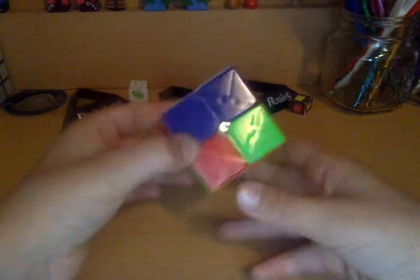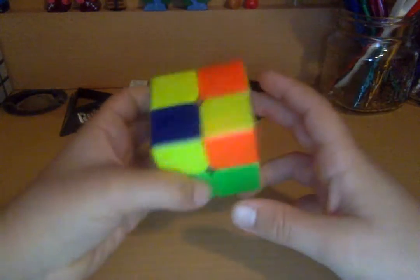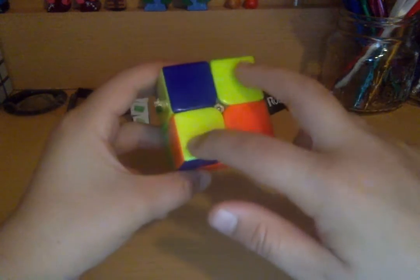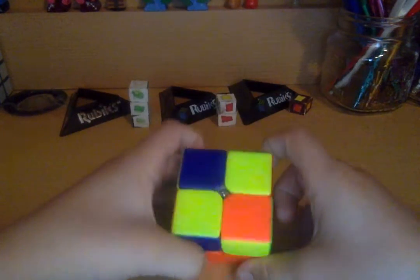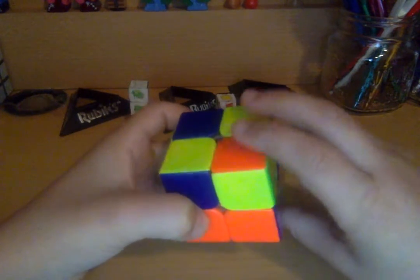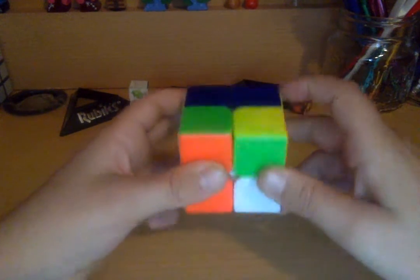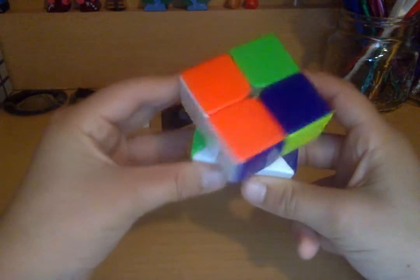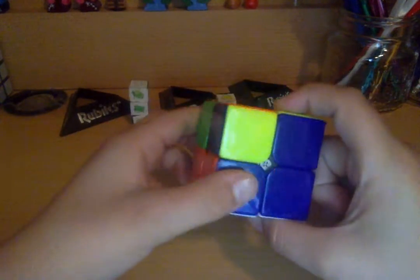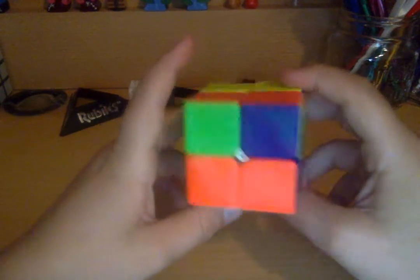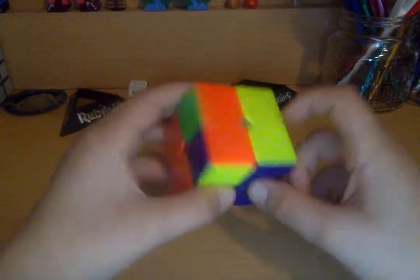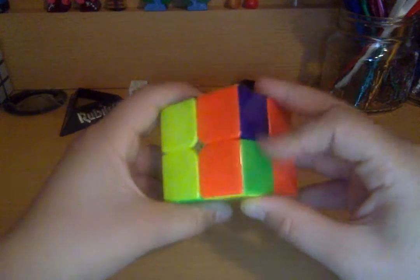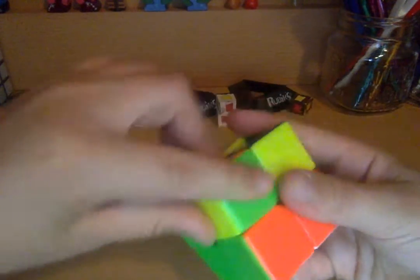Now you're going to solve the top layer. If it's like this, hold it like this with the top part. You're going to want to do front up, then go like that, put it down, put it in, and then front again. Then if it's like this, you're going to want to hold it like this. The aim is to have it over like this.